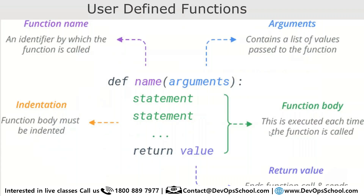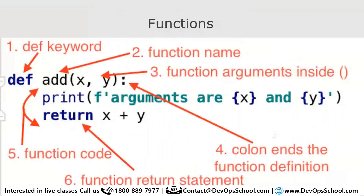To define a function in Python you start with `def`, then the function name, arguments, statements, and a return value. Here there is one function called `add` that accepts two arguments, `x` and `y`. When you call this function you always have to pass those two arguments — there is no type specification here.